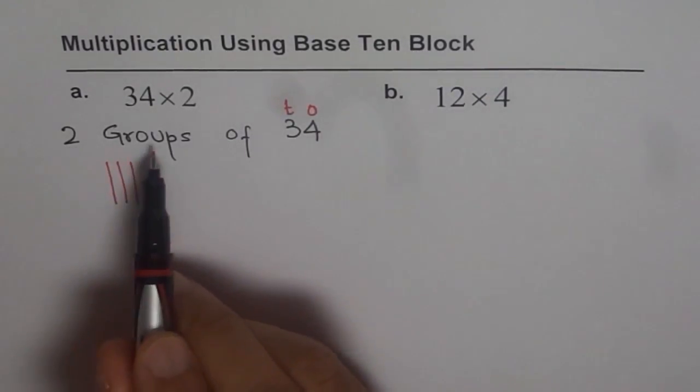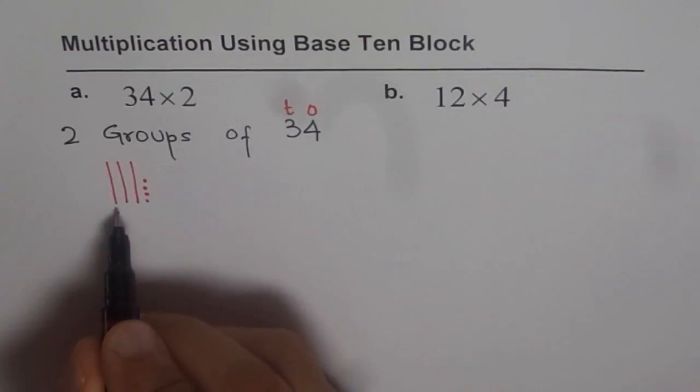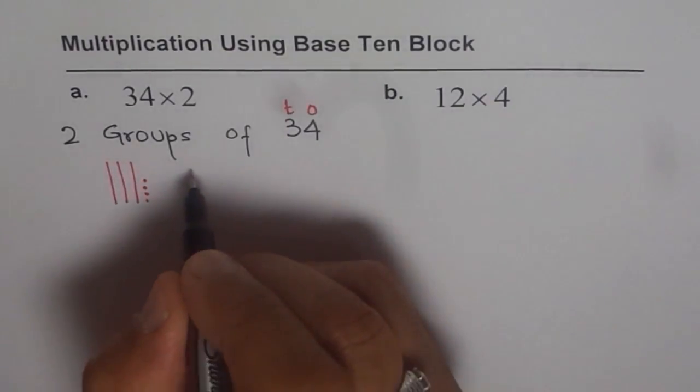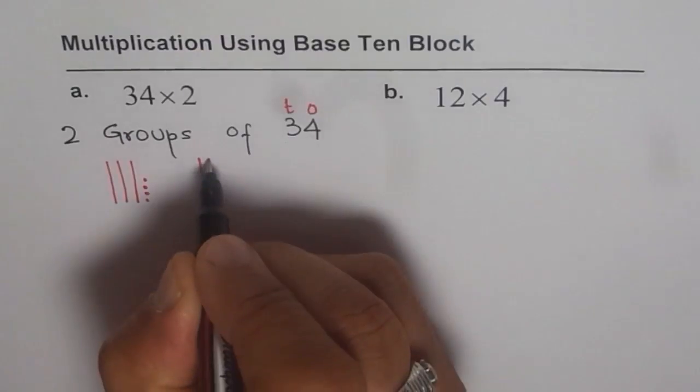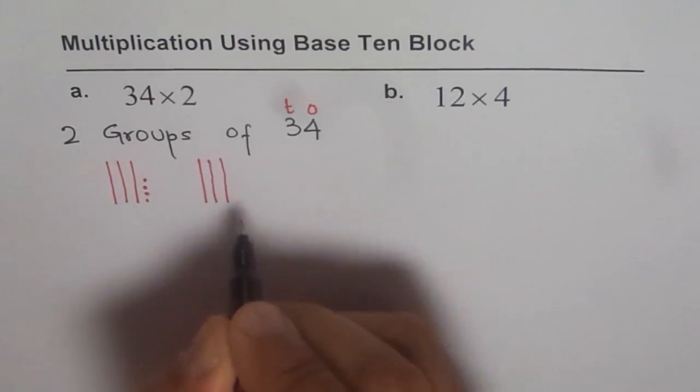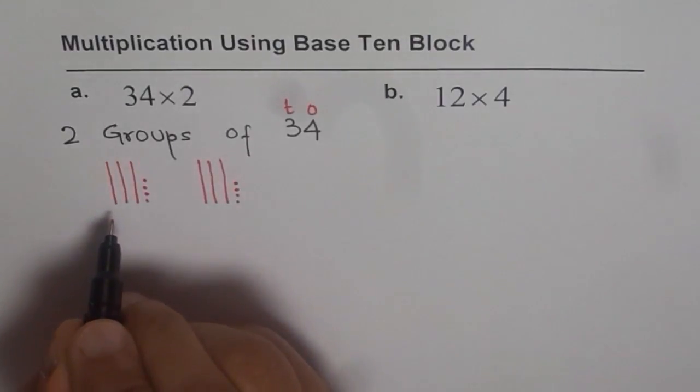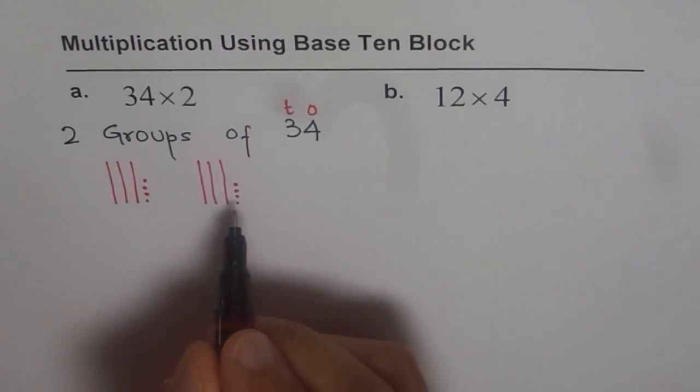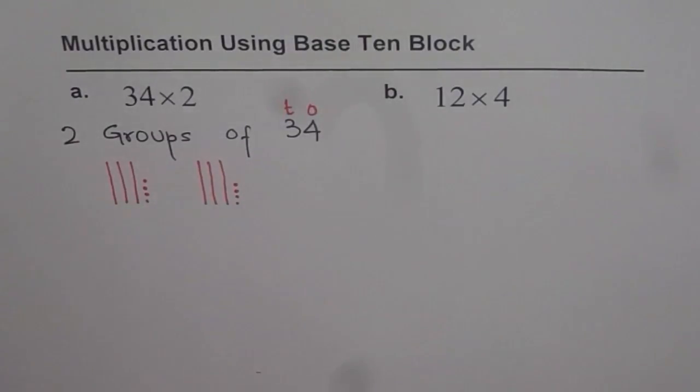Now I need 2 groups of 34. So that is group number 1. The second group is 3 tens and 4 ones, right? So now I have 34 times 2, 2 groups of 34. How much is that?